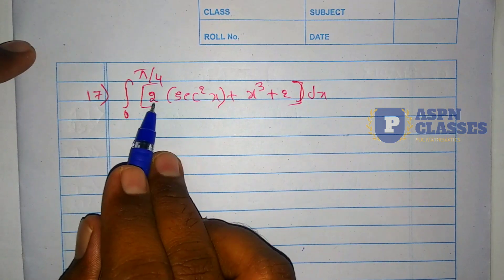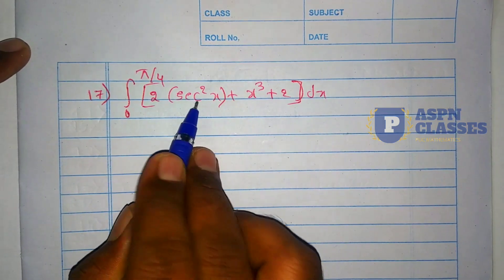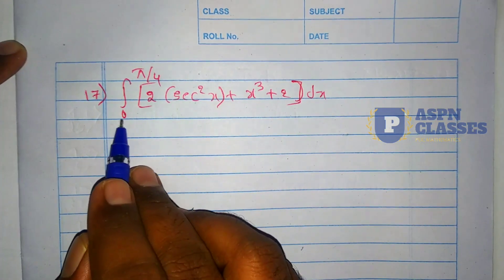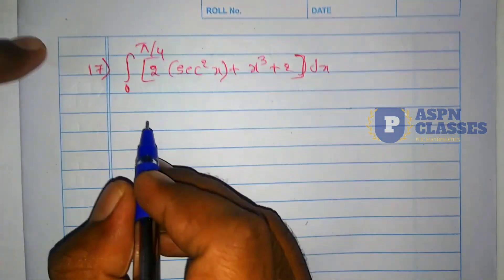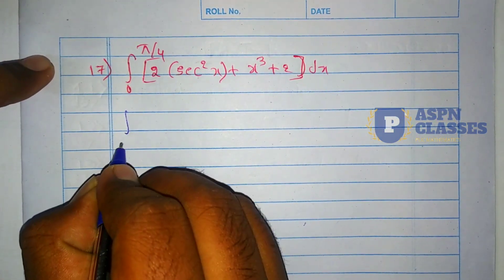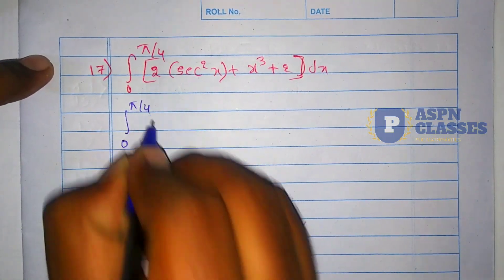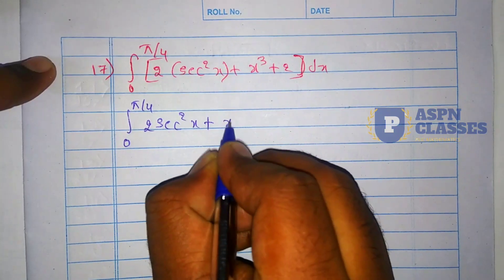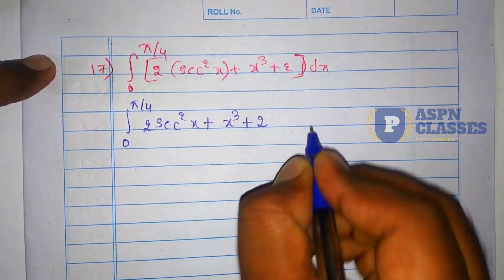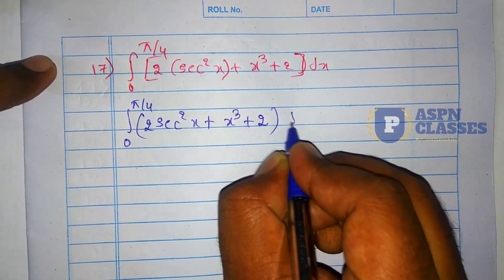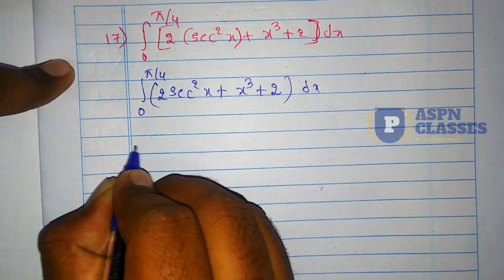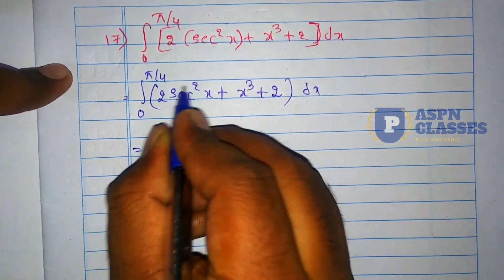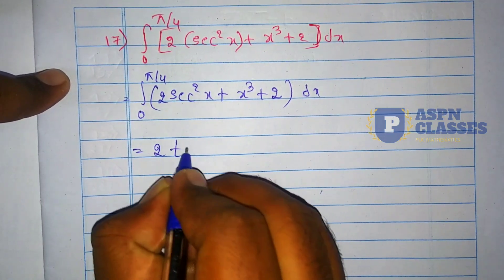The 17th question is: integration of (2·sec²x + x³ + 2)dx with limit 0 to π/4. This is very simple. The limit is 0 to π/4 for (2·sec²x + x³ + 2)dx, and we integrate this completely.